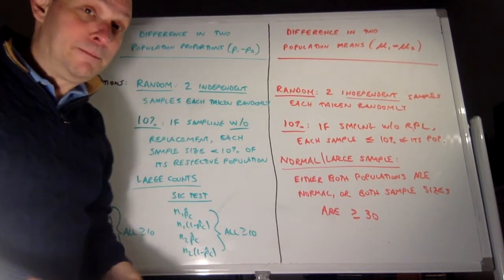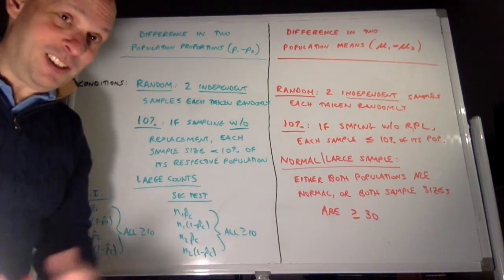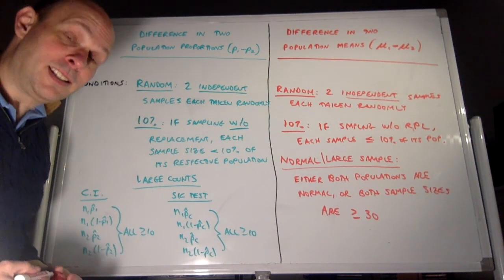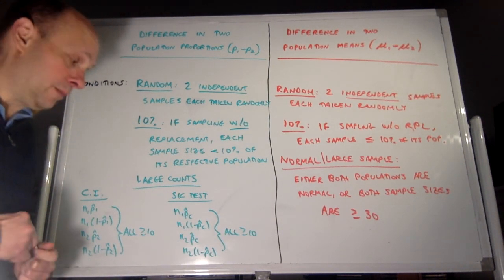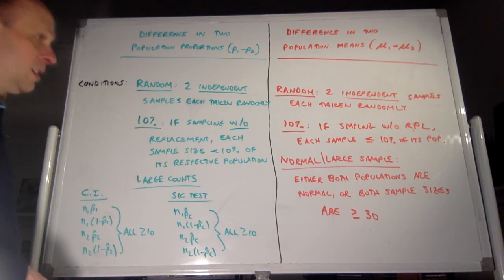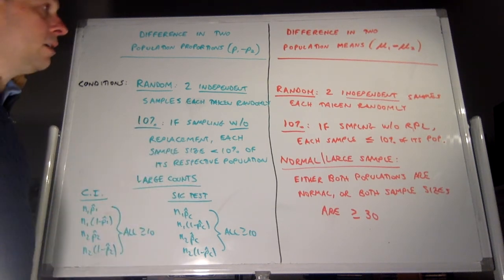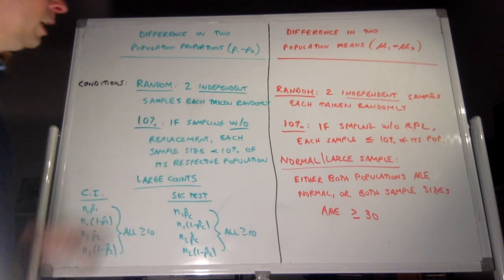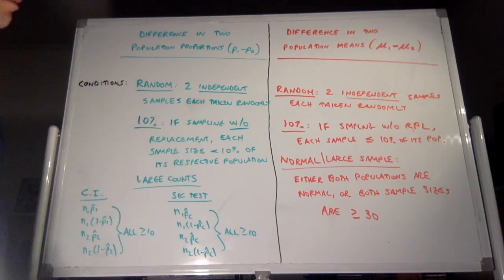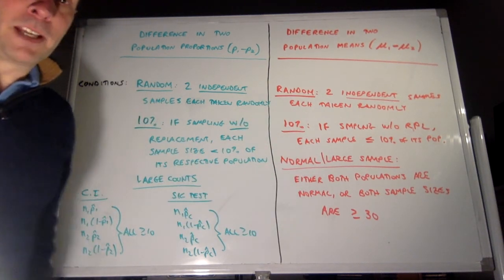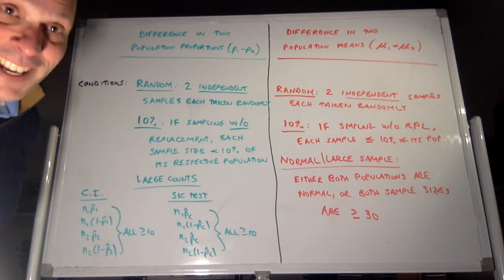If sample sizes are bigger than 30, it doesn't matter what the shape of the population is, thanks to the central limit theorem. This has been a summary of the side-by-side comparison of the difference in proportions and the difference in means from Chapter 10.